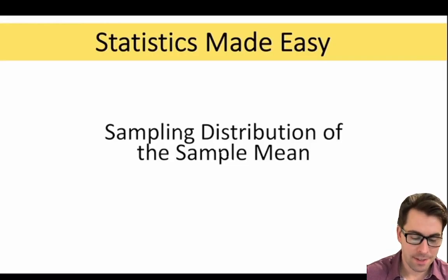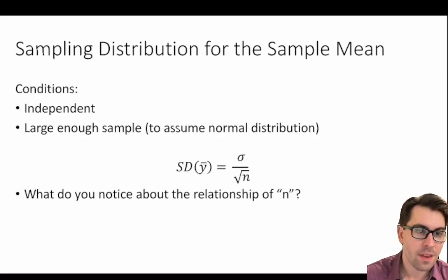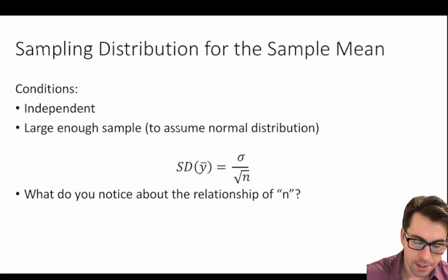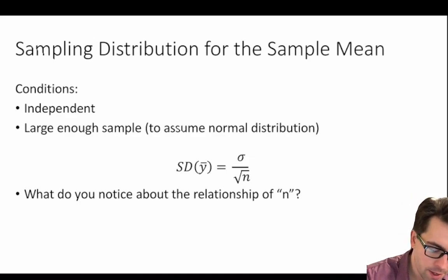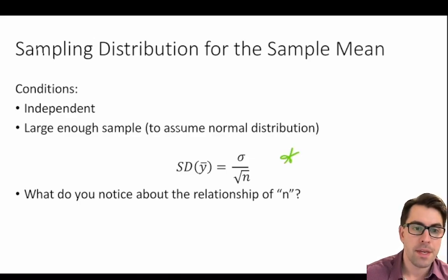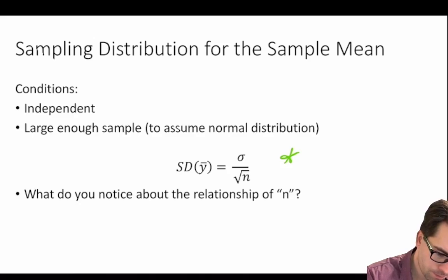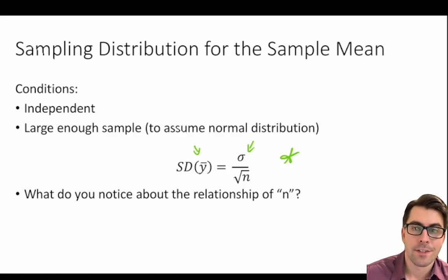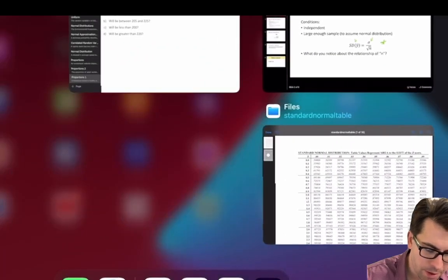In this video we're going to discuss the sampling distribution of the sample mean. The sampling distribution for the sample mean is very similar to the sampling distribution for sample proportions. The important difference is that here we're calculating the standard deviation of the mean of our sample, that is SD of y-bar. This is equal to sigma divided by root n, where sigma is the standard deviation of our population and n is our sample size.